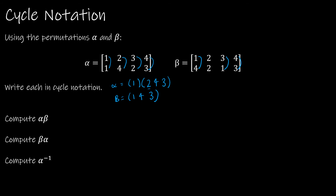For alpha, after the one-cycle, I go to the next unassigned number — two. Two maps to four, four maps to three, and three maps back to two, which is that first number, so I close it. For beta, the only one I haven't used is two, which maps to two. Where one maps to one and two maps to two, those are called identity cycles — they're mapping to themselves. When we write our final solution, we typically don't write the one-cycles. So alpha is written (2 4 3) and beta is written (1 4 3).